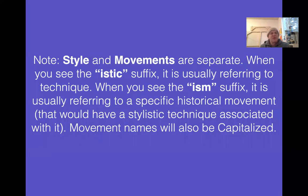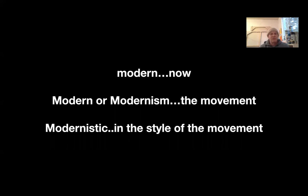Style and movements are two separate things. When you see the suffix '-istic', it's usually referring to technique. When you see the suffix '-ism', it's usually referring to a specific historical movement that would have a stylistic technique associated with it. Movement names can be capitalized — they usually are. So when we say 'modern' with a small m, it just means now, contemporary. If we see it with a big M or an '-ism', it means the movement of Modernism. And with '-istic' — modernistic — that just means in the style of that movement.